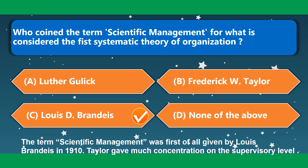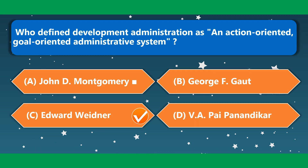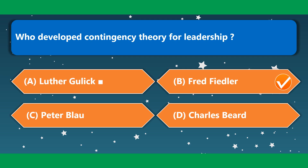Who coined the term 'Scientific Management' for what is considered the first systematic theory of organization? This is Louis D. Brandeis. In 1910, Taylor gave much concentration on the supervisory level. Who defined Development Administration as an action-oriented, goal-oriented administrative system? Edward Weidner. Who developed the Contingency Theory for leadership? Fred Fiedler.